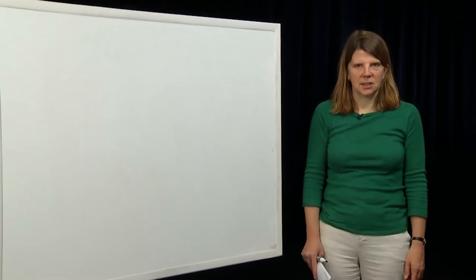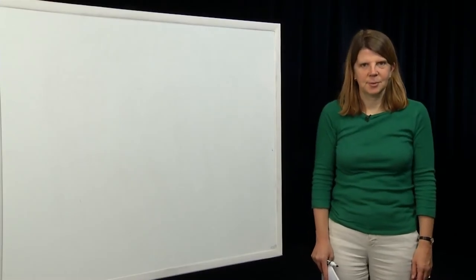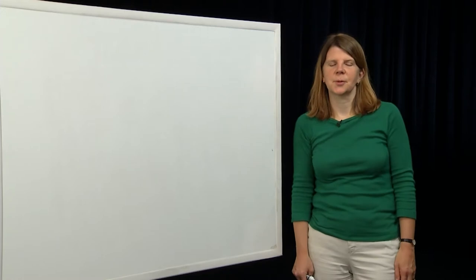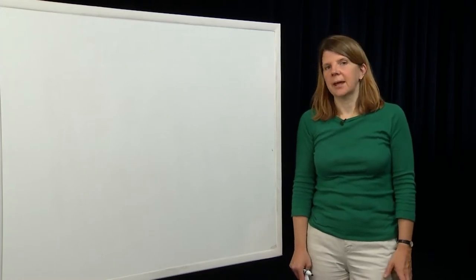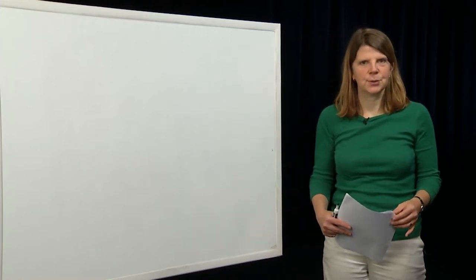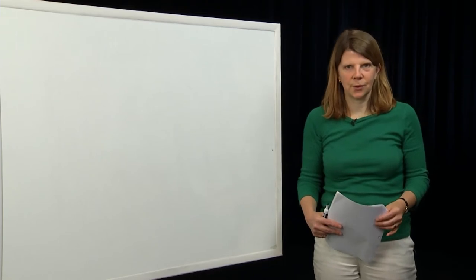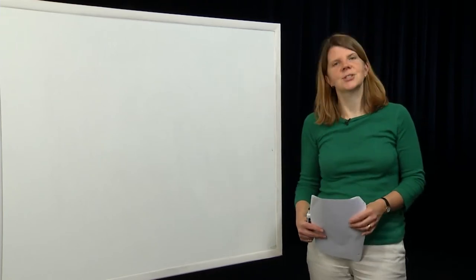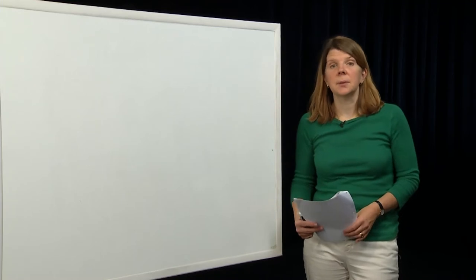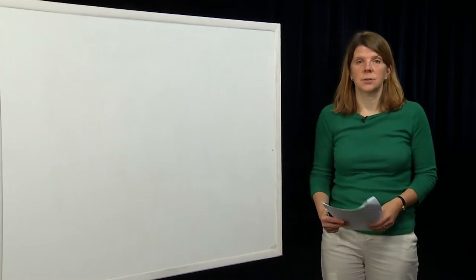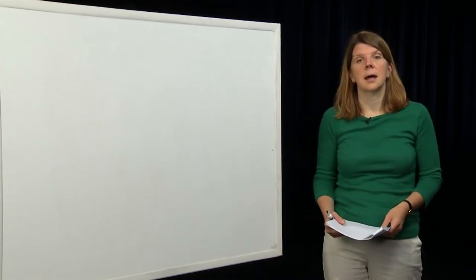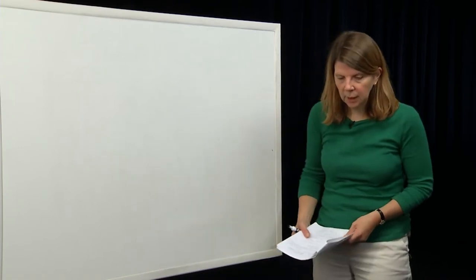Hi, everyone. My name is Claire Tomlin. I'm a professor of electrical engineering and computer sciences at Berkeley. This is the 10th module in a series we're recording to support the course EECS 221A, which is linear system theory at Berkeley. The topic of today's module is orthogonality and adjoints.